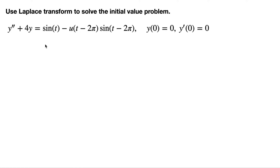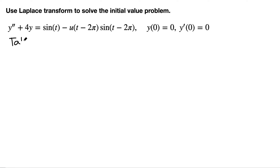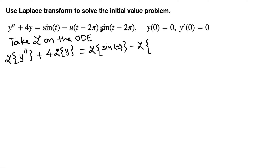We use Laplace transform to solve the initial value problem. We have a second order ODE and two initial conditions. Taking Laplace transform on the ODE, we have Laplace of y'' plus 4 Laplace of y equals Laplace of sin(t) minus Laplace of the product of the unit step function times sin(t − 2π).